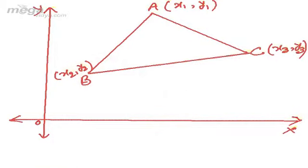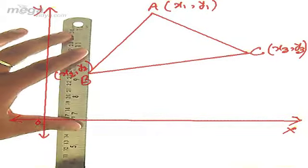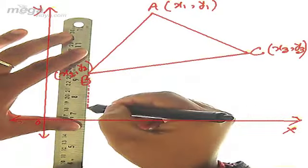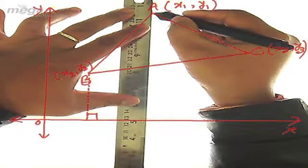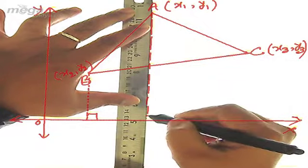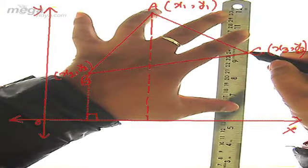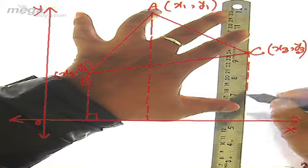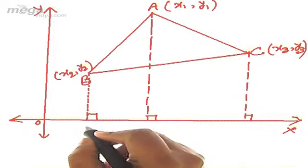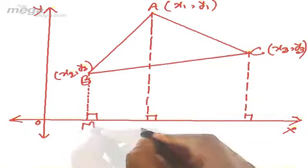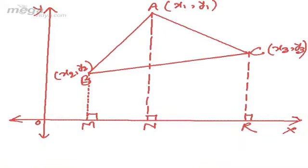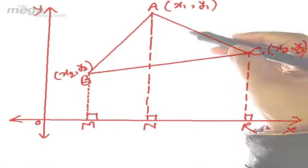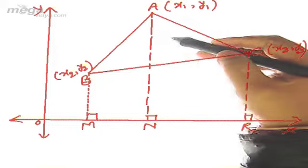First of all, we will draw perpendiculars from B to the x-axis, from A to the x-axis, and from C to the x-axis. Suppose BM, AN, and CR are these perpendiculars. To get the area of the triangle, we use trapeziums.